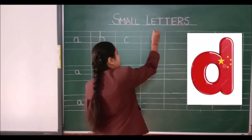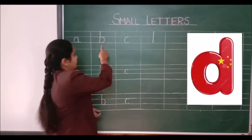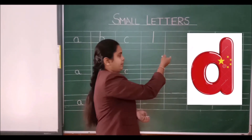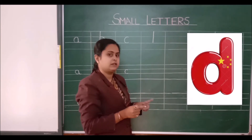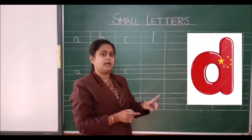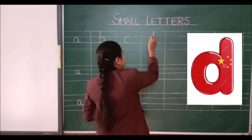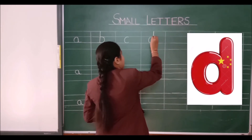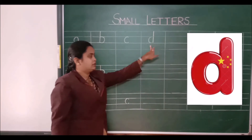To write letter D, first you have to make a standing line. Then you have to make a curve like this — like this, in this way.